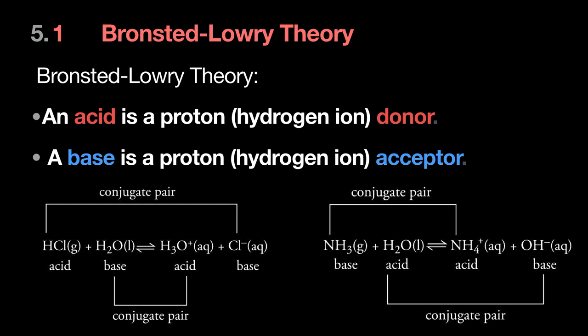You also had the idea of conjugate pairs: the acid, on losing a proton, becomes its conjugate base. For example, Cl⁻ is the conjugate base of HCl — equivalently, HCl is the conjugate acid of Cl⁻.